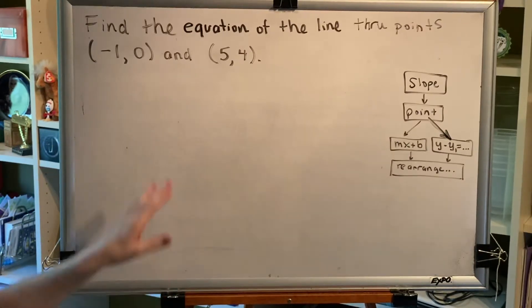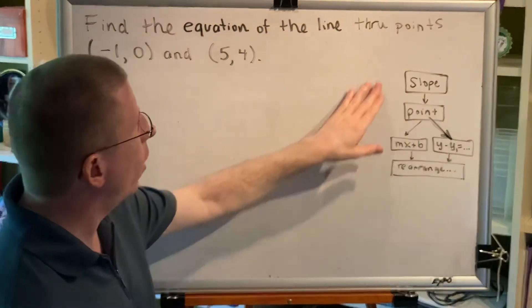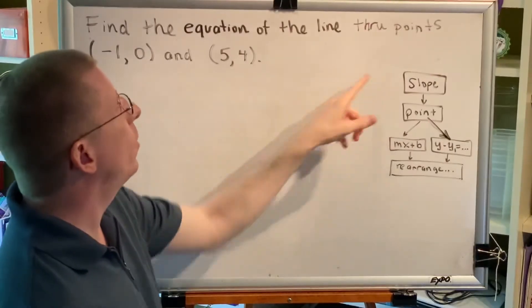So we remind ourselves we're being asked for the equation of a line and then we need to think our way through our flowchart. The first thing we need to know is the slope.